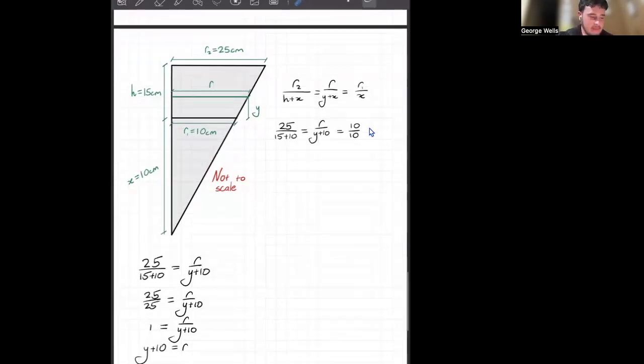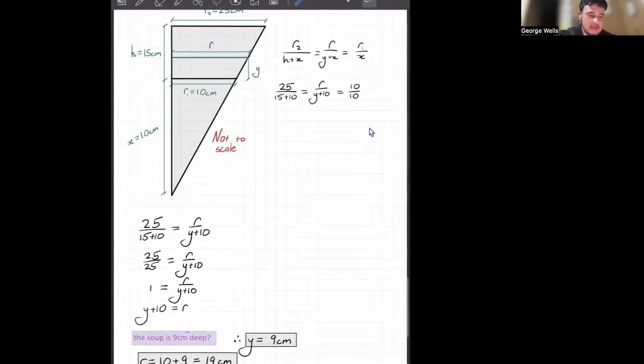Anyways, moving on. We can take this and we can try to solve for a little equation with r and y. There's a pretty simple math here. 15 plus 10, 25, 25 over 25, 1.